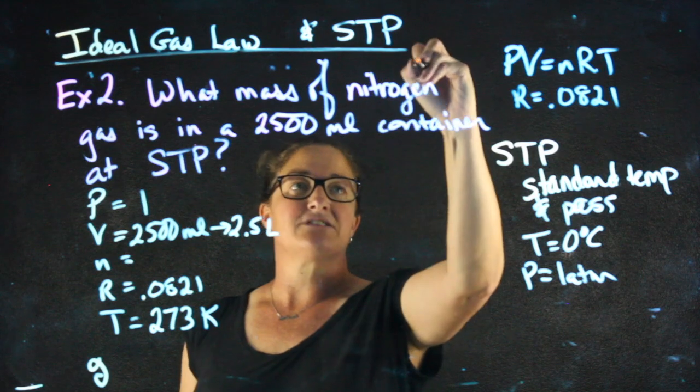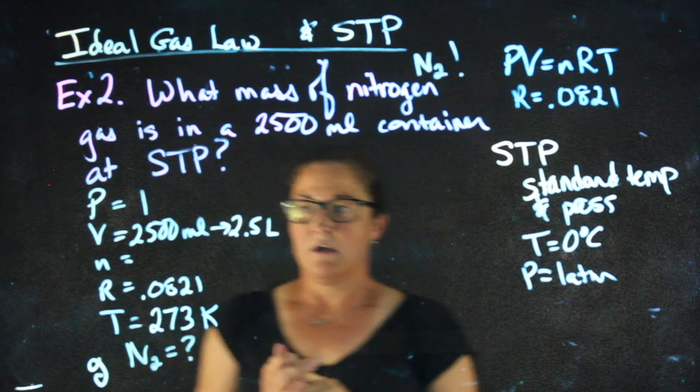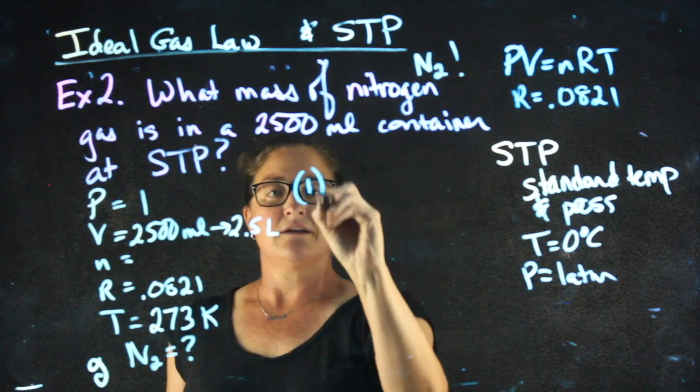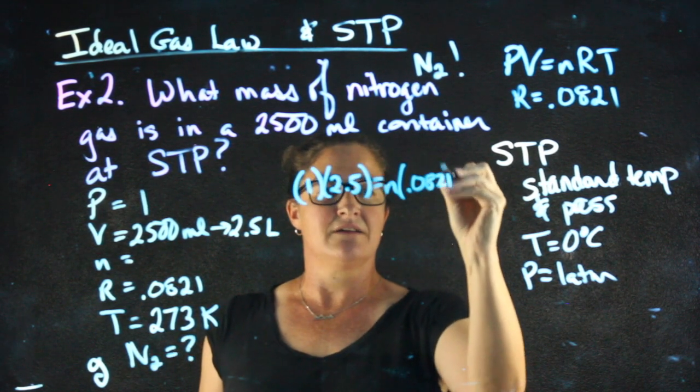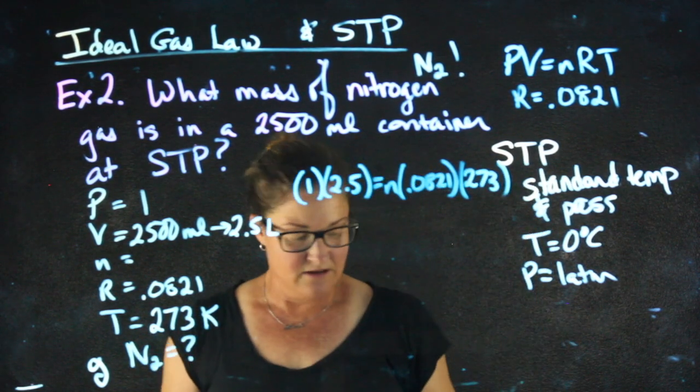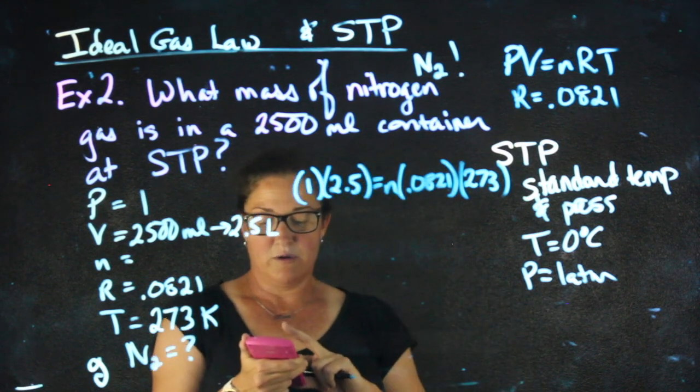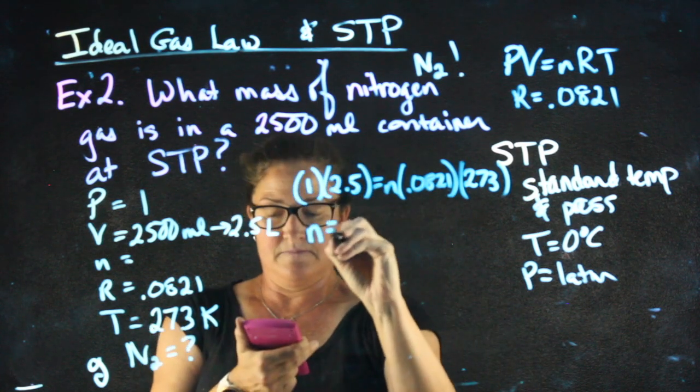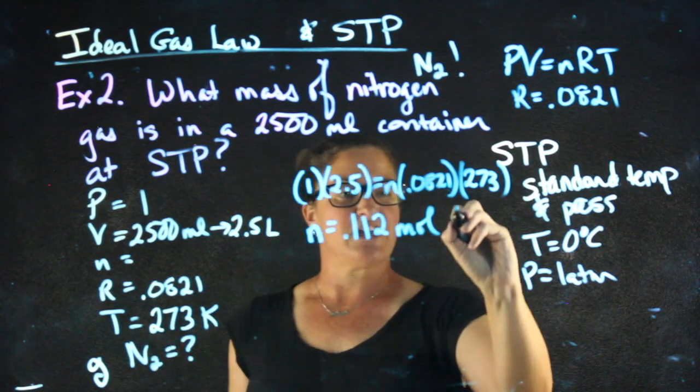Remember, nitrogen gas, diatomic, N2. Okay, so first plugging into PV equals NRT. 1 times 2.5 equals N times 0.0821 times 273. 2.5 divided by 0.0821 and then divided by 273 gives me 0.112 moles of nitrogen gas.